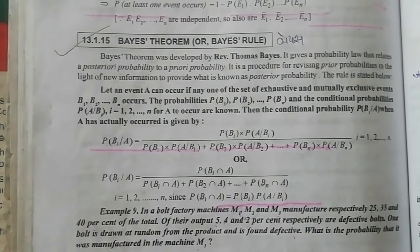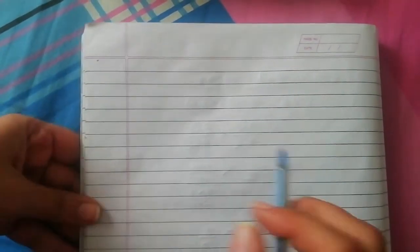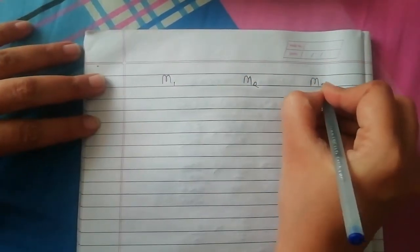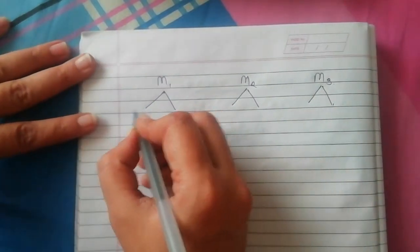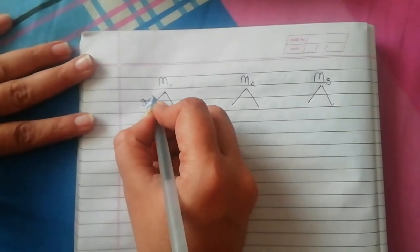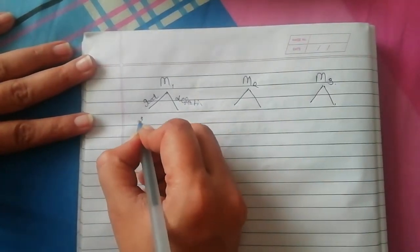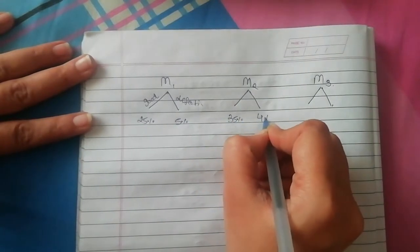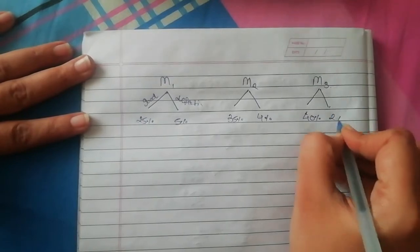We have three cases. I'll show you on the page. We have machine M1, machine M2, and machine M3. On the left side is the good production and on the right side is the defective production for each machine. So the production percentages are: M1 — 25% total, 5% defective; M2 — 35% total, 4% defective; M3 — 40% total, 2% defective.